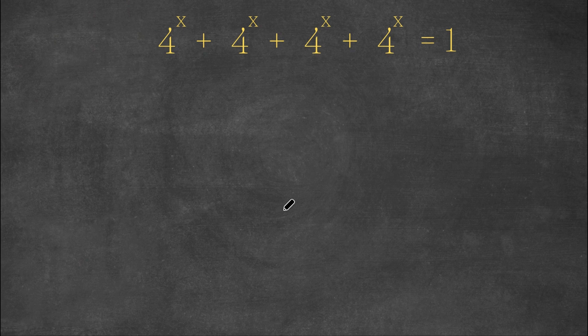Welcome back to Click Academics. In today's video, I'm going to be teaching you guys how to solve this exponential equation. We have 4 to the power of x plus 4 to the power of x plus 4 to the power of x plus 4 to the power of x is equal to 1.